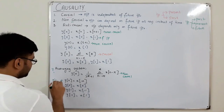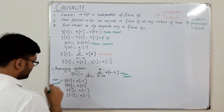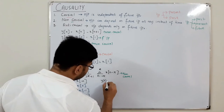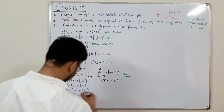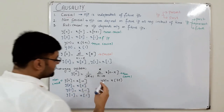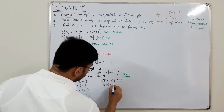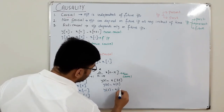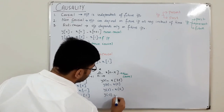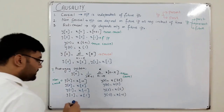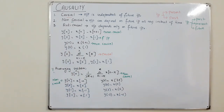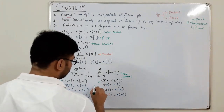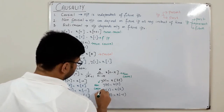For y(t) = x(3t): y(0) = x(0), y(2) = x(6), and y(-2) = x(-6). The output depends on both future and past values depending on the sign of t. This is again a non-causal system.